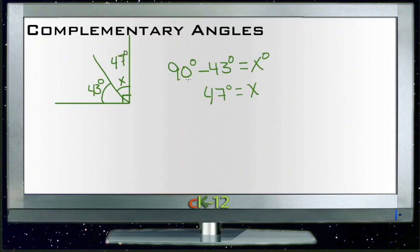And since 43 plus 47 is 90, we know that that's correct. So it's a pretty basic sort of a concept. Just make sure that you don't get confused with complementary and supplementary.